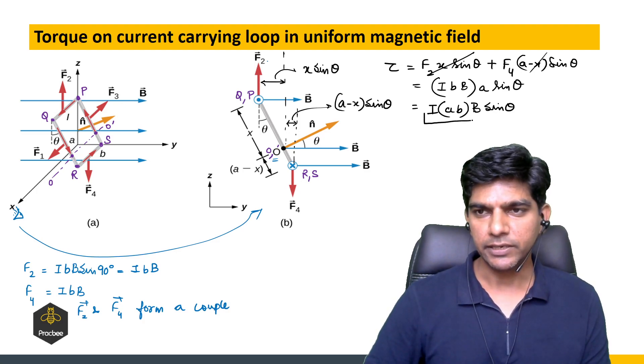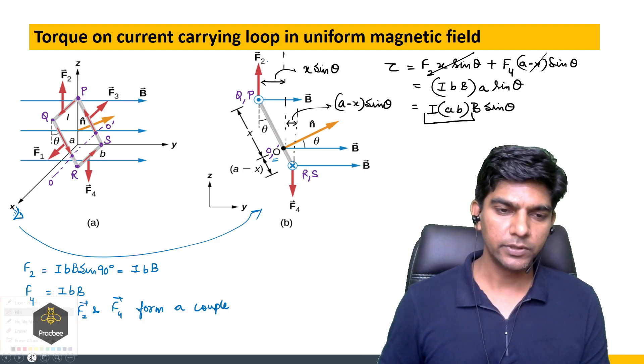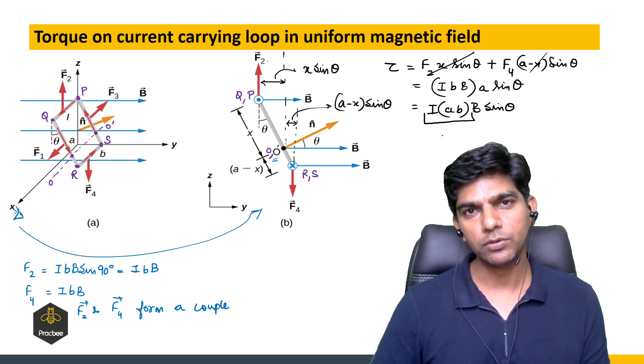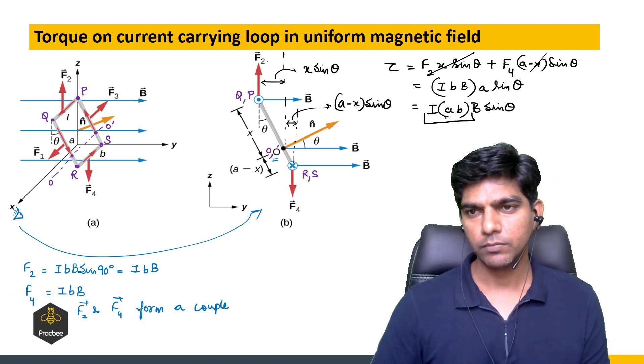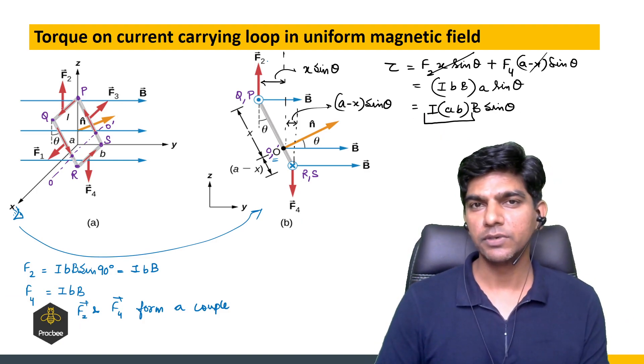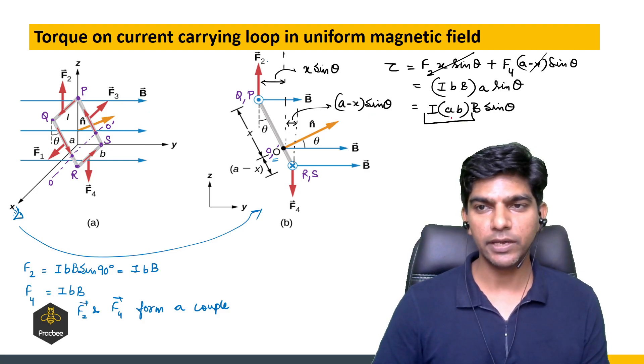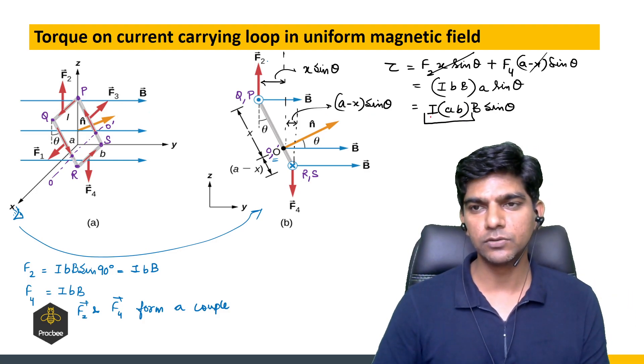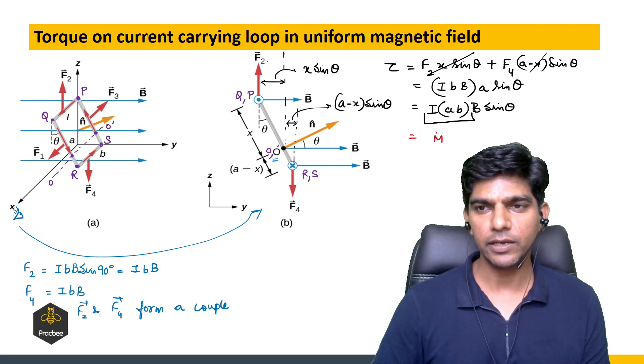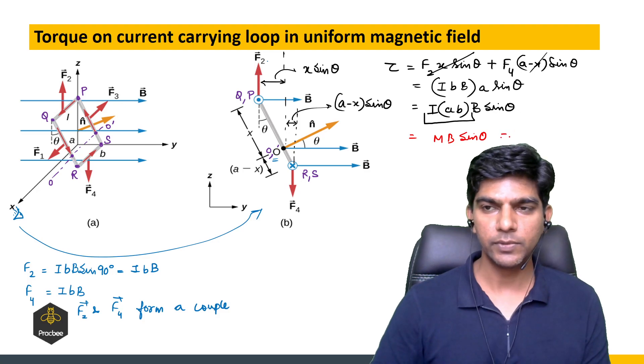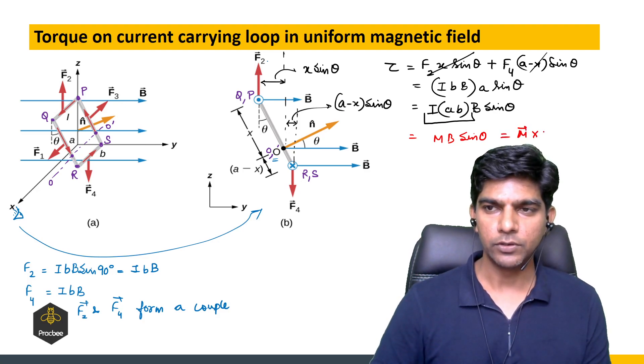Now this term that we have here is nothing but the magnetic dipole moment of this particular loop. Because this loop has number of turns equal to 1, I times A, so AB is the area of this loop, I is the current in the loop, so this will be magnetic dipole moment M cross B.